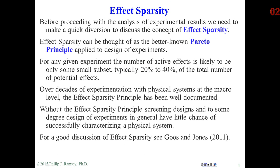An important principle is something called effect sparsity. If you've had some background in industrial quality control, it's similar to what's known as the Pareto principle. We may have a large candidate set of potential effects, but in reality, only a small number — maybe 20, as high as 40% — may actually be important. In fact, if effect sparsity didn't really hold, design of experiments would have little chance of succeeding.